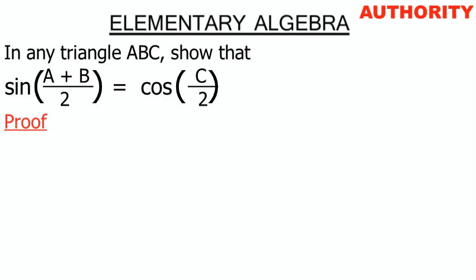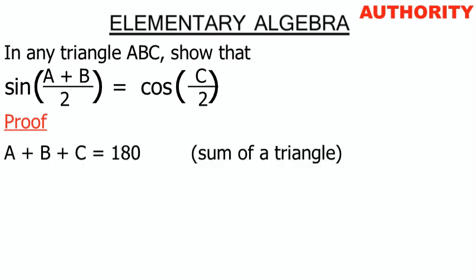We have sin((A+B)/2) is equal to cos(C/2), and we are dealing with triangle ABC. Now, we know that the sum of angles in a triangle is 180°, so we have A + B + C = 180°.